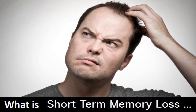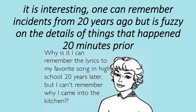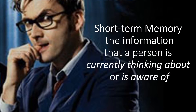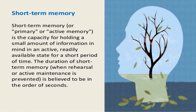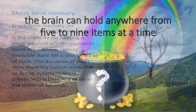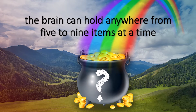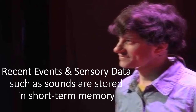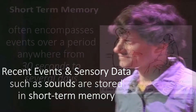What is short-term memory loss? It is interesting — one can remember incidents from 20 years ago but is fuzzy on the details of things that happened 20 minutes prior. Short-term memory is the information that a person is currently thinking about or is aware of. It is also called primary or active memory. The brain can hold anywhere from five to nine items at a time. Recent events and sensory data such as sounds are stored in short-term memory.